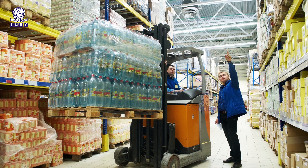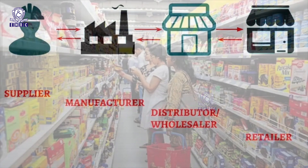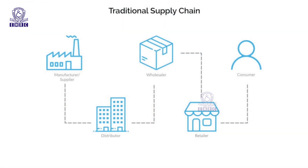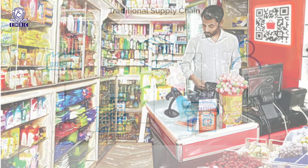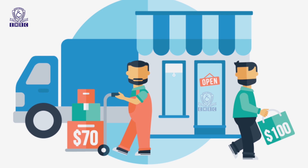Wholesale trade involves buying in large quantities from producers or manufacturers and selling in lots to retailers for resale to consumers. The wholesaler is a link between manufacturer and retailer, and acts as an intermediary between producers and retailers, since manufacturers as well as retailers are both dependent upon them. Retail trade involves buying in smaller lots from the wholesalers and selling in very small quantities to consumers for personal use. The retailer is the last link in the chain of distribution, establishing the link between the wholesalers and the consumers.